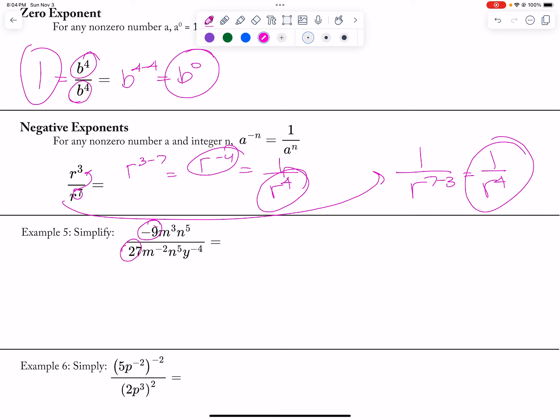I have negative 9 and negative 27, so that is negative 1 3rd. If I bring the negative 2 up, this would have been m to the 3 minus negative 2 power. My 5ths cancel out, and then I have 1 over y to the negative 4th. So this would have been m to the 5th power, and I would have brought the negative 4 power up, so this would be y to the 4th, all divided by 3.